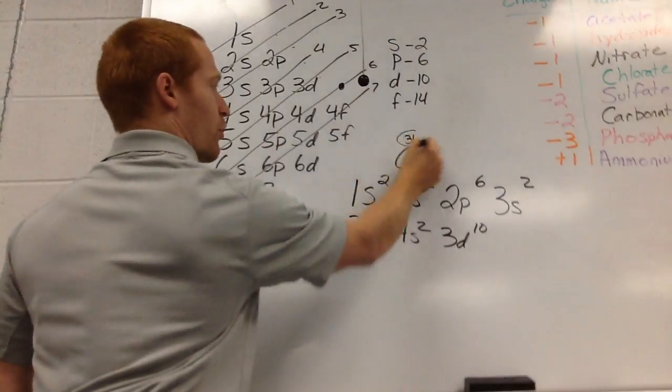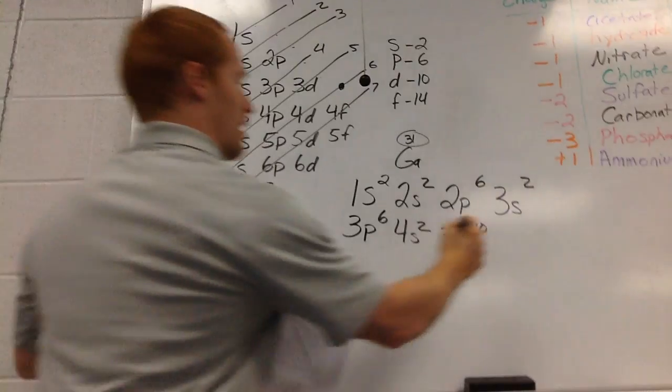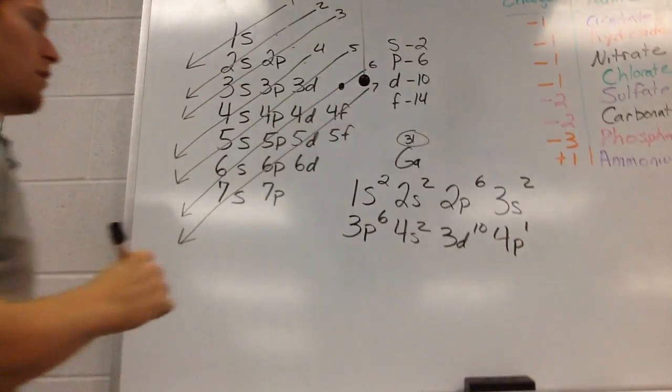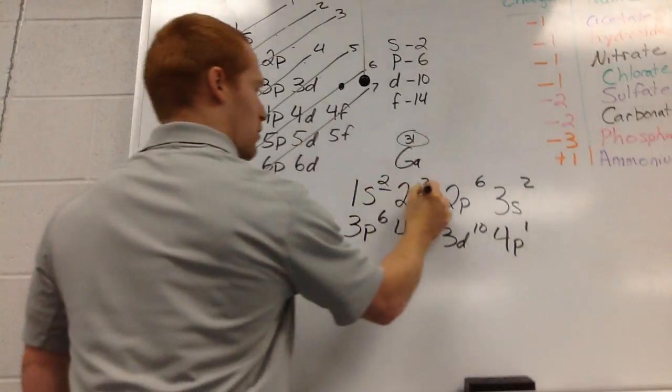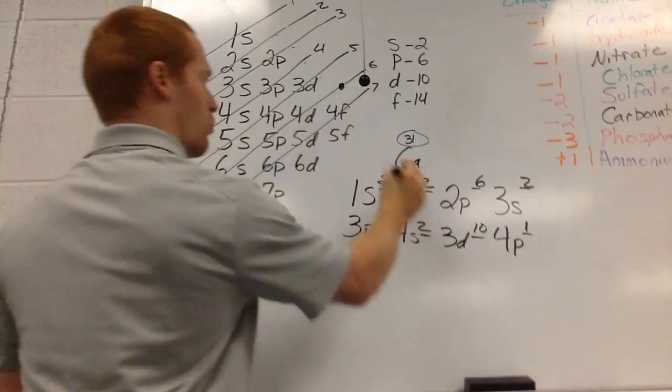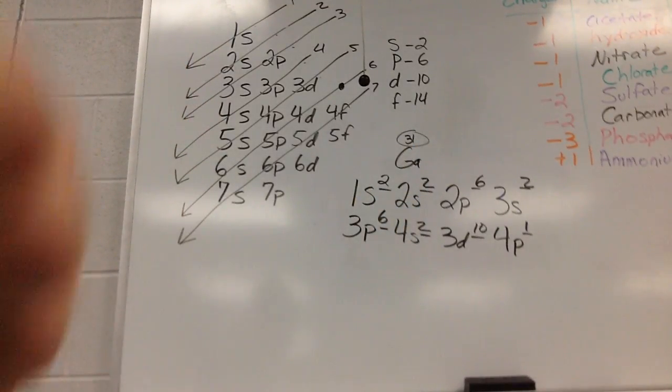We need 31. So we need to go after 3d10, we go down the arrow to 4p, and we will need 1 electron. So if you add up all your exponents right now, you should get 31, which is the atomic number of gallium.